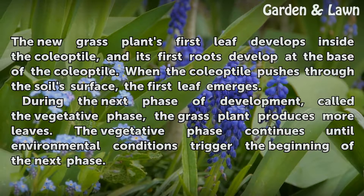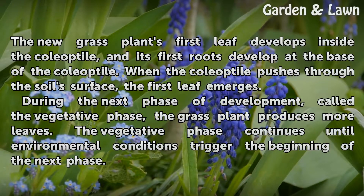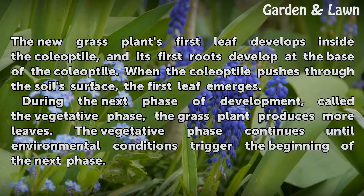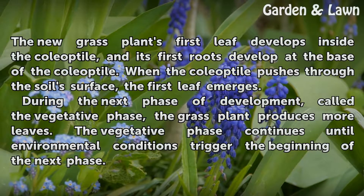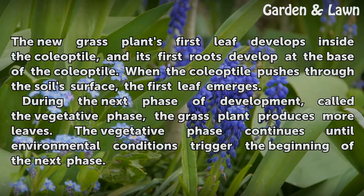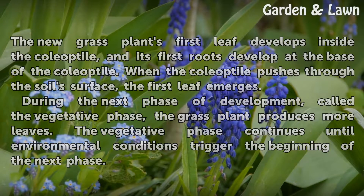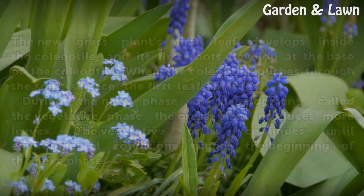During the next phase of development, called the vegetative phase, the grass plant produces more leaves. The vegetative phase continues until environmental conditions trigger the beginning of the next phase.